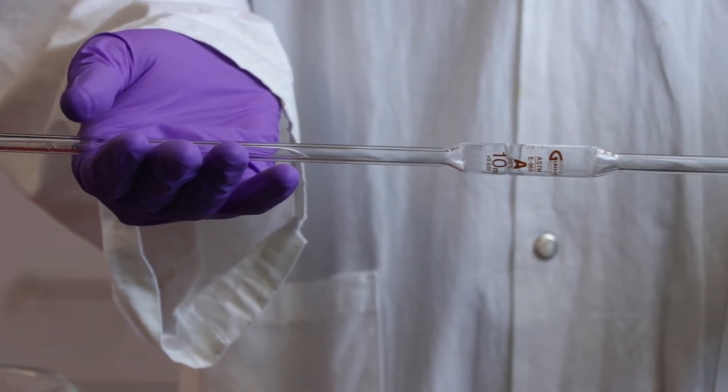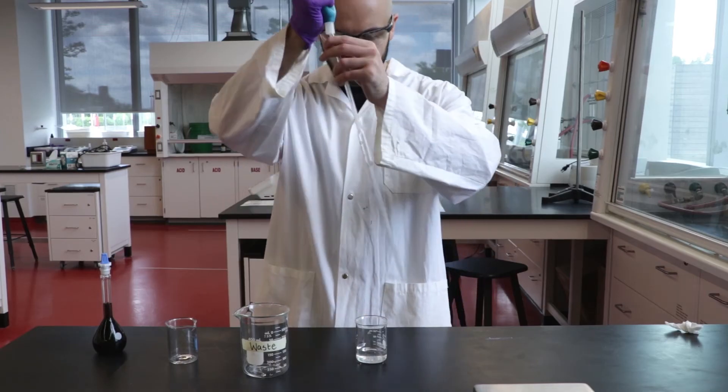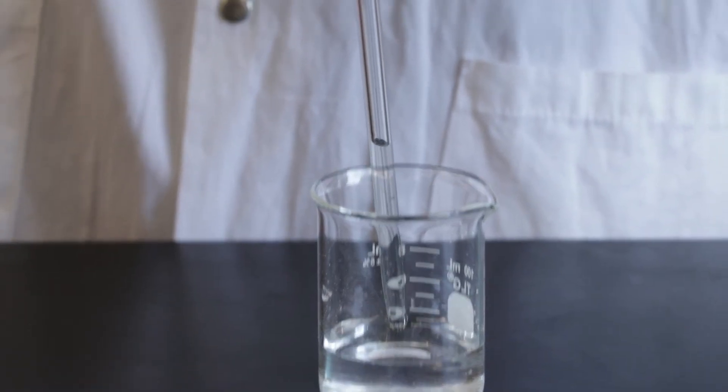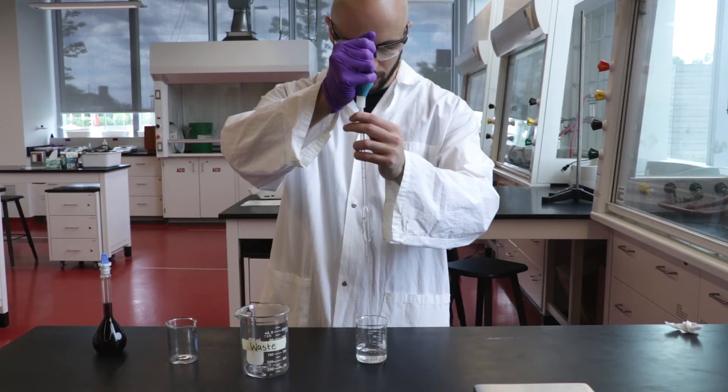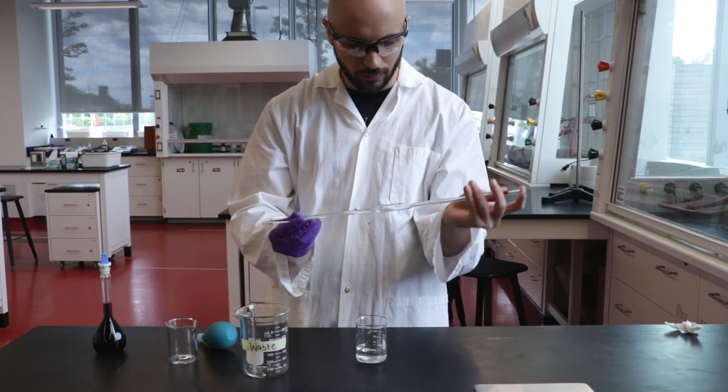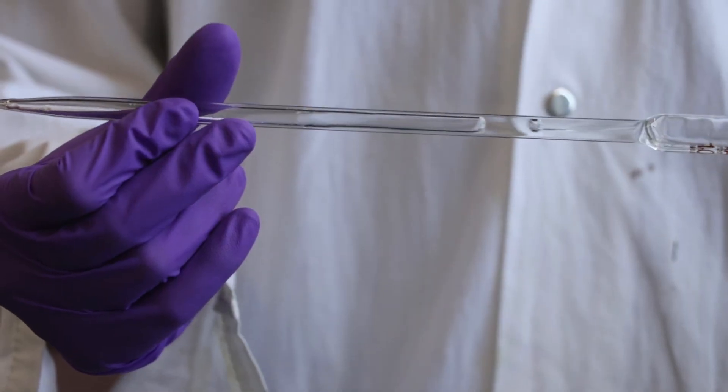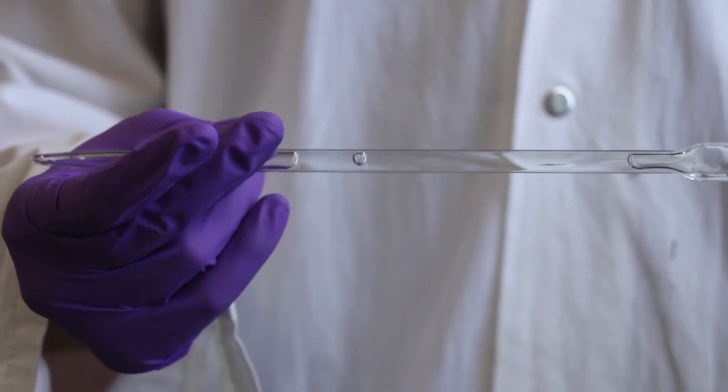Volumetric pipettes must be cleaned before use to ensure accurate volumes are delivered. First rinse the pipette three times with distilled water. Draw up a small volume of water until it just reaches the wide section of the pipette. Rinse the inner surface of the pipette by swirling the distilled water back and forth throughout the pipette and then discard the solution.